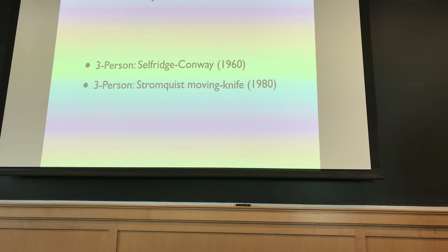The discrete version is the Selfridge-Conway procedure — a discrete procedure where person A cuts, person B looks at it and does something, then person C does something, and there's some procedure. I-cut-you-choose is very simple for two people, but for three it's really complicated.